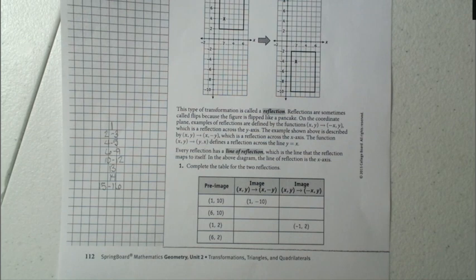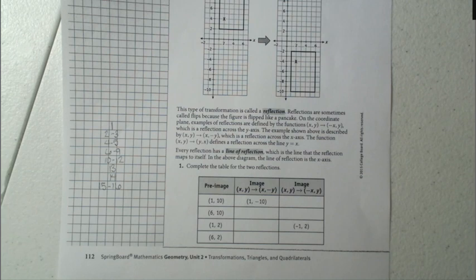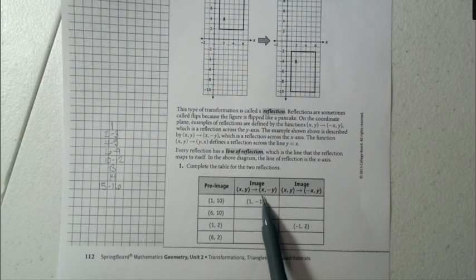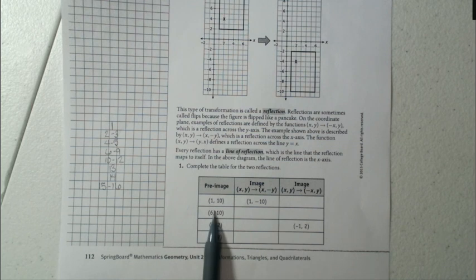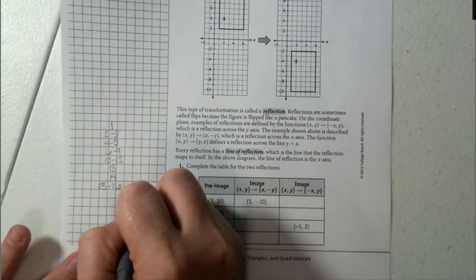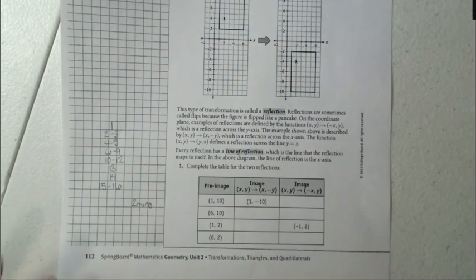Number one says, complete the table for the two reflections. It gives you all the pre-image data. It gives you four points. And it asks in the first one for (x, y) goes to (x, -y). Then it also wants you to go from (x, y), the original point, to (-x, y). This shouldn't take us any time. I'm going to say about two minutes max on this. Two minutes to go through question number one only.